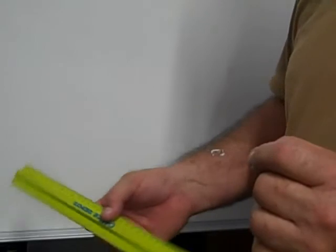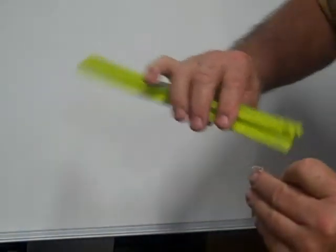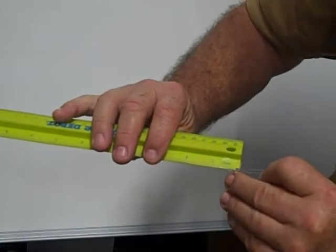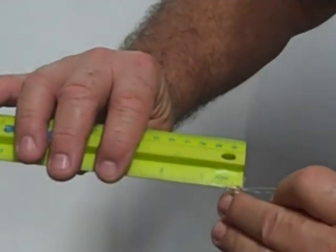This is a wire terminal base bulb. To measure the overall length, we measure just the glass part. This one measures seven-sixteenths of an inch.